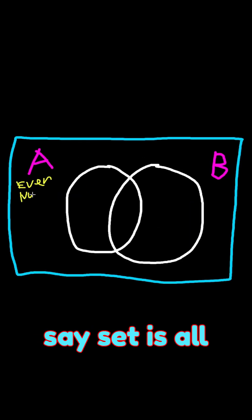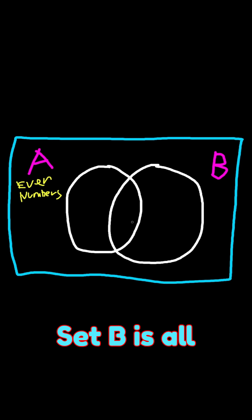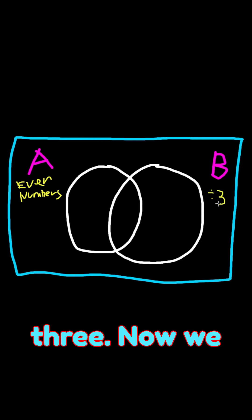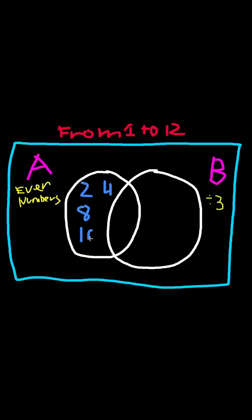For example, let's say set A is all the even numbers, and set B is all of the numbers divisible by 3. Now we can sort all the numbers in the right place.